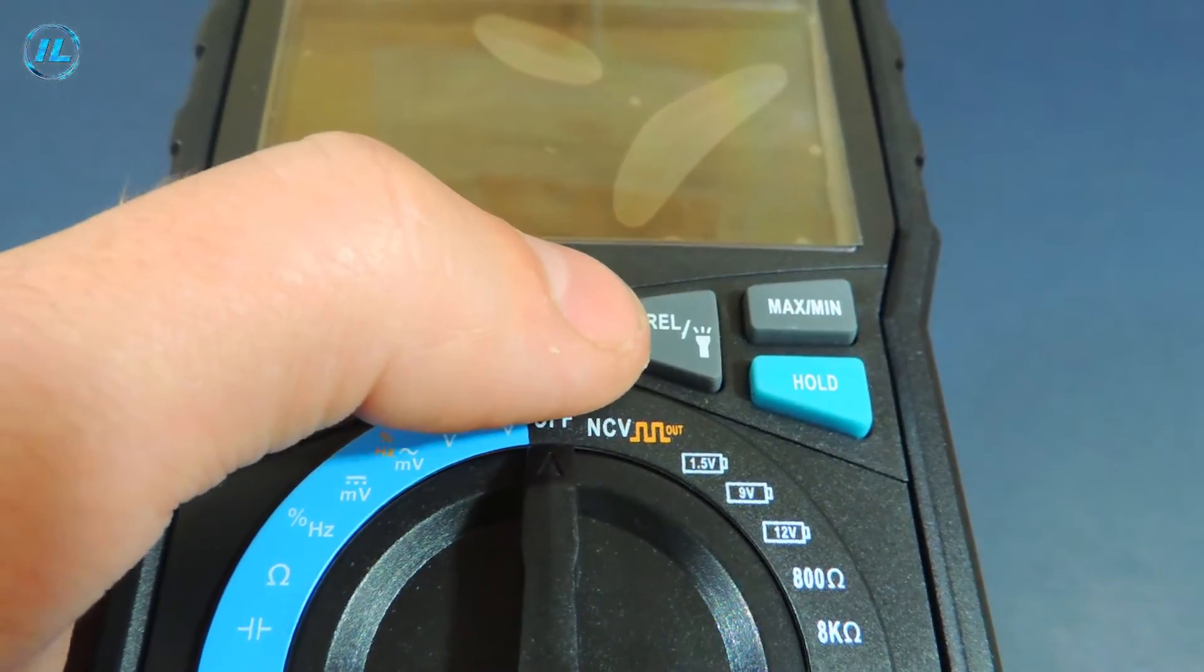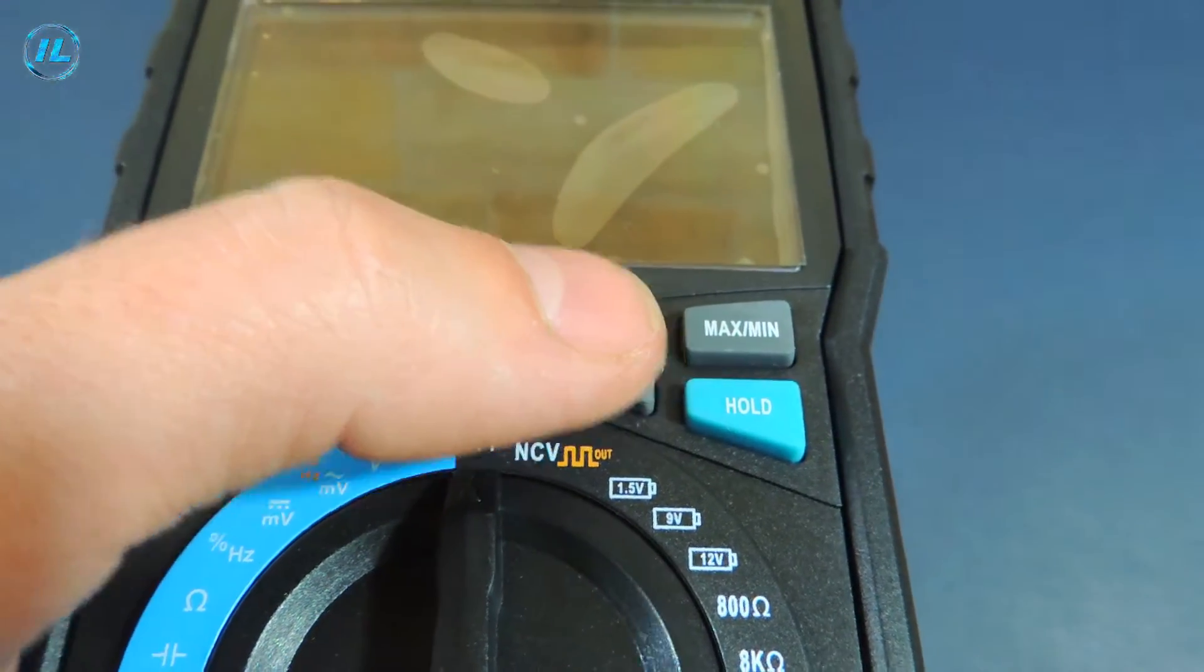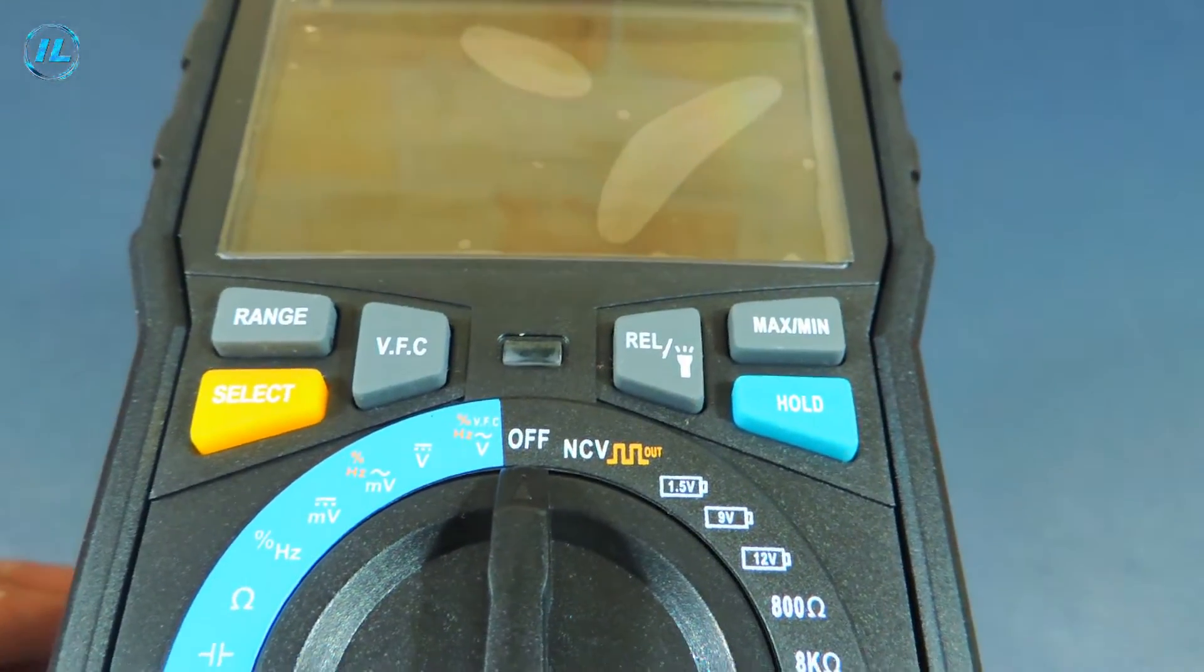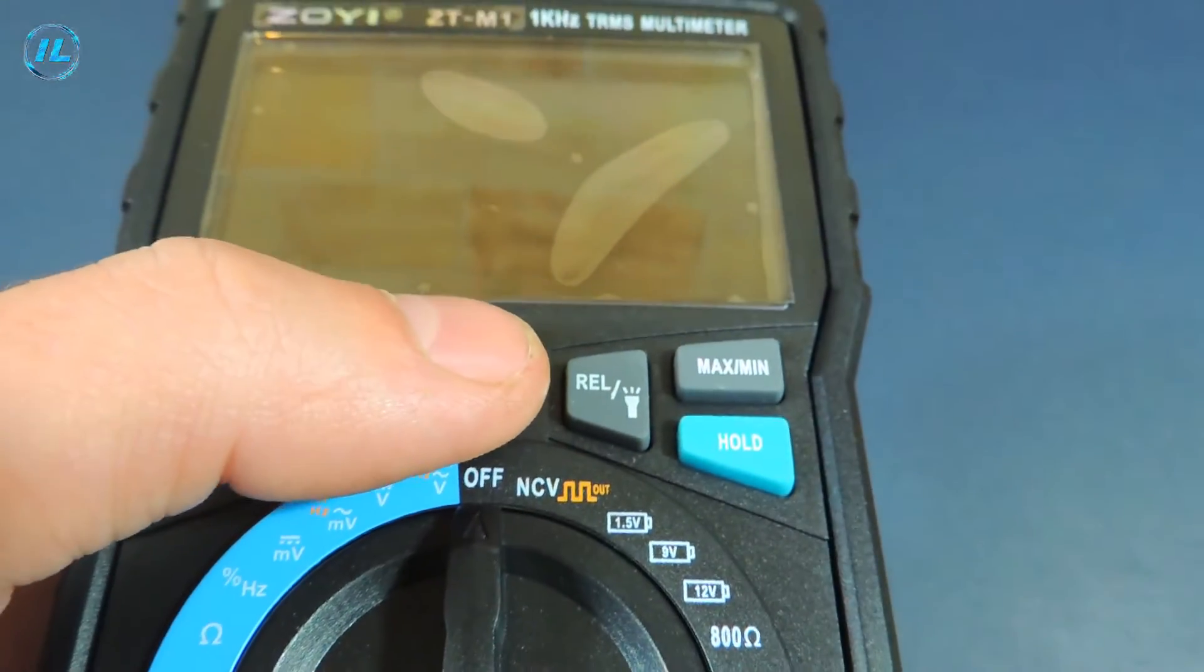Next is the REL button. It turns on the relative measurement mode and when pressed for a long time turns on and off the flashlight. The max min button is a measurement of the maximum and minimum values. And the hold button is the fixation of measurement results on the screen.